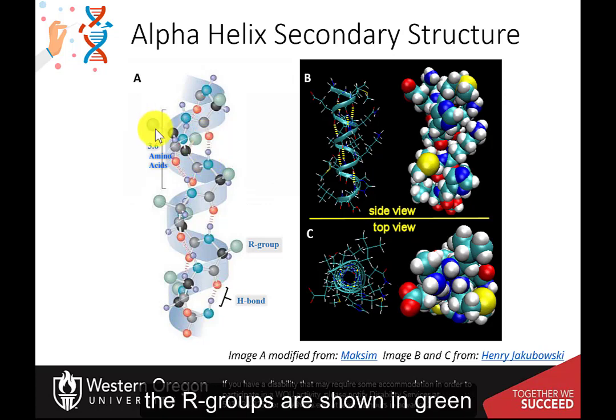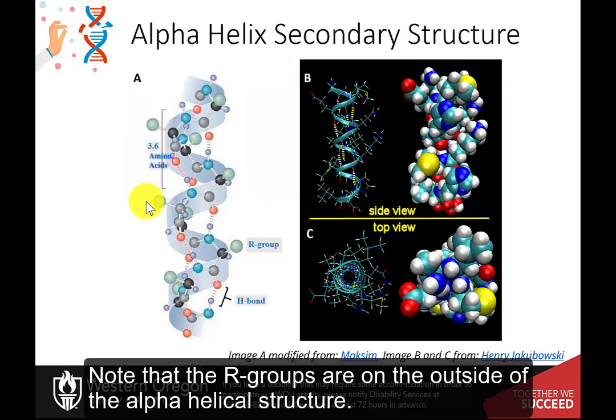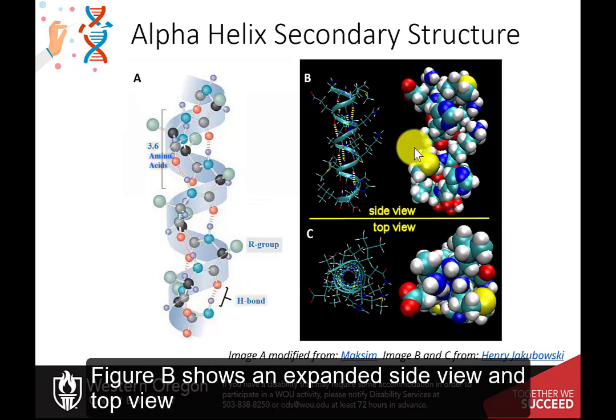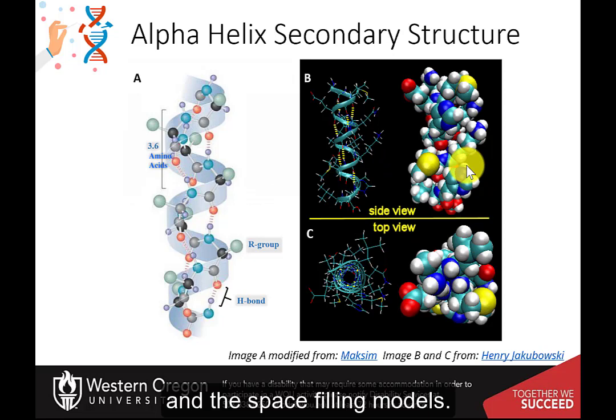The R groups are shown in green, and the light purple are the hydrogen atoms. Note that the R groups are on the outside of the alpha helical structure. Figure B shows an expanded side view and top view, with both the linear structure and the space-filling models.